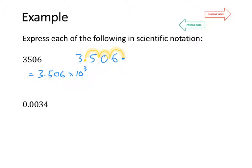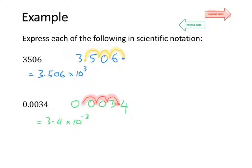The next number I want to convert into scientific notation is 0.0034. Looking at moving my decimal place to make a number between 1 and 10 — I move it 1, 2, 3 places to the right. So my number becomes 3.4 times 10 to the power of negative 3. It is negative 3 because I moved my decimal place 3 places to the right, and moving to the right gives a negative index. So 0.0034 in scientific notation is 3.4 × 10⁻³.